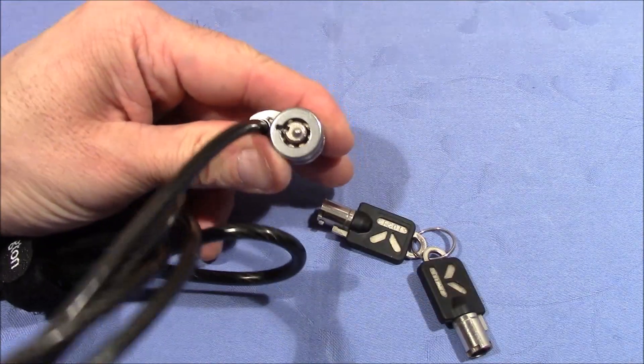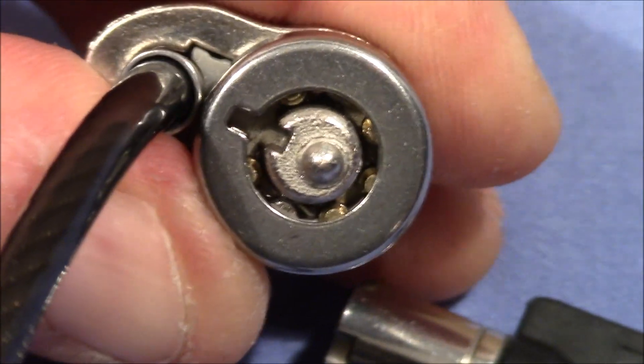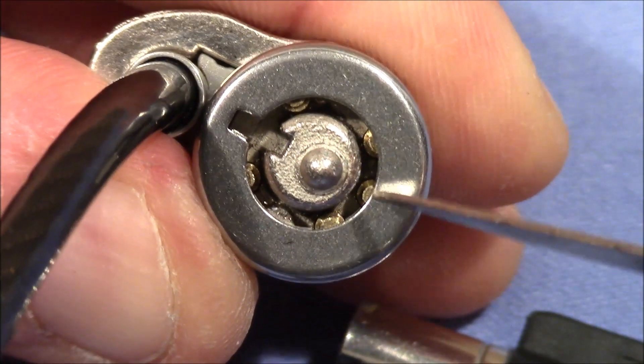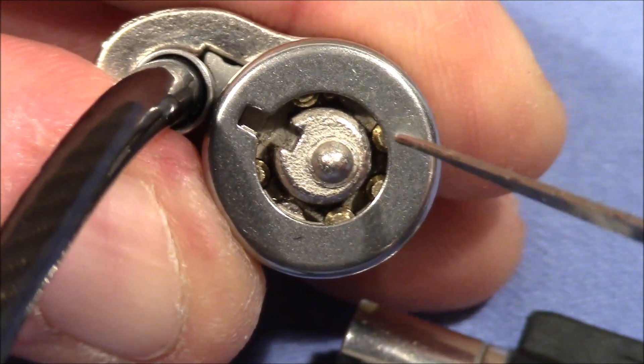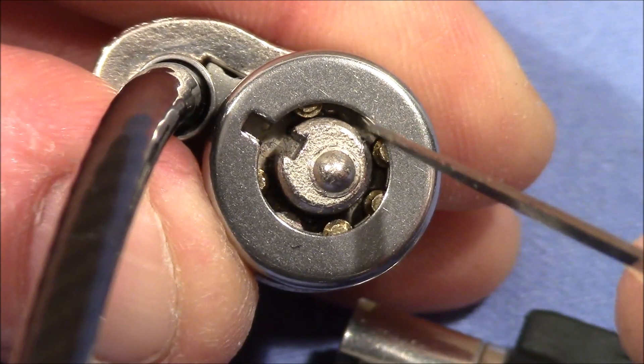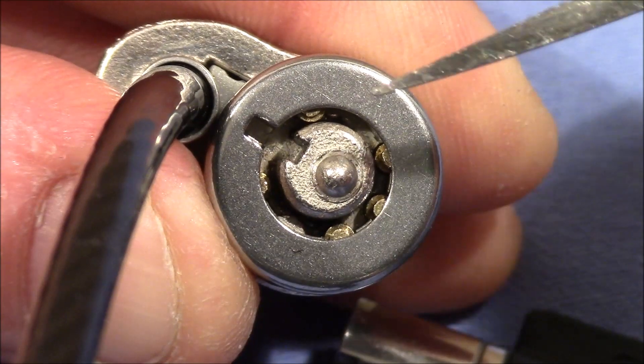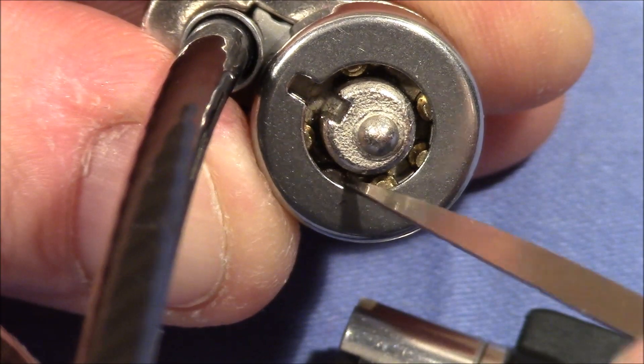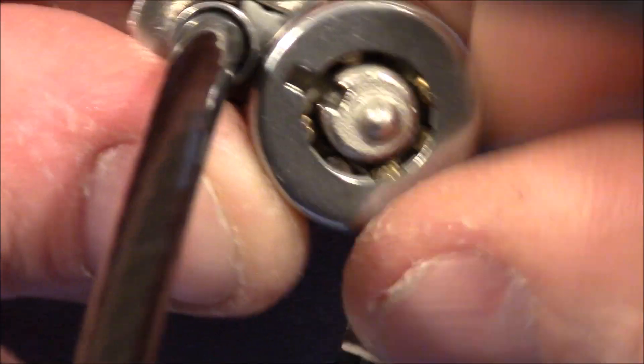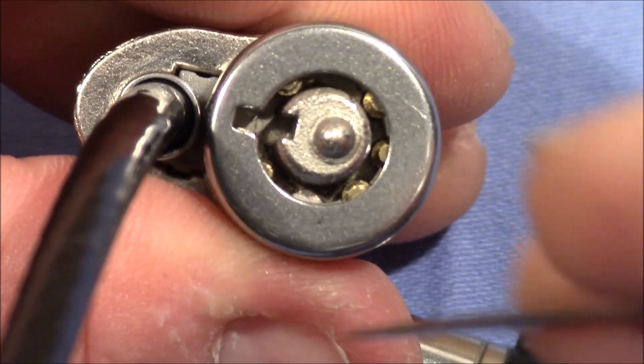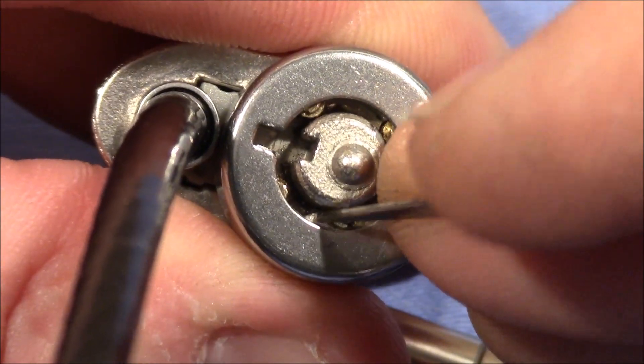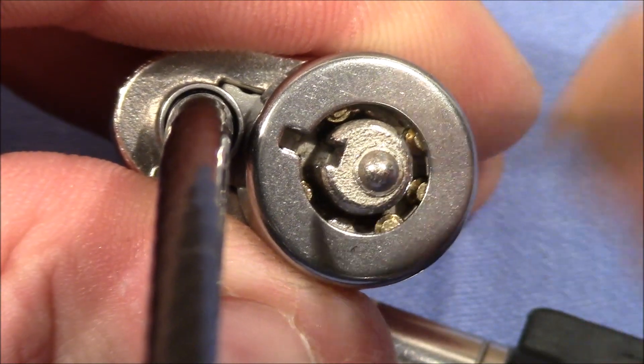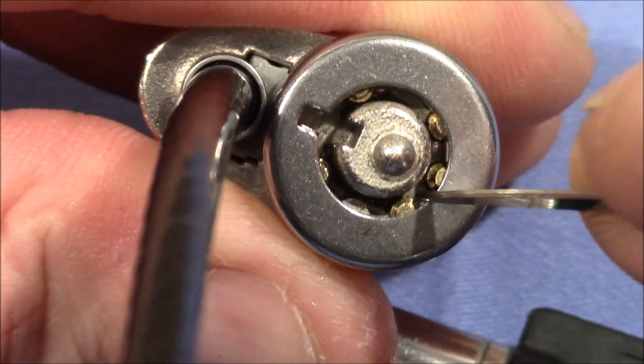But when we look at the pins we can see some weirdness going on. So usually these locks have 7 pins but this has only 5 active pins. We can see an empty spot right here. And we can see a dummy pin there. So this is not a pin, this is just a piece of metal. It doesn't get depressed. So nothing to pick here, nothing to pick there. Only 5 active pins.